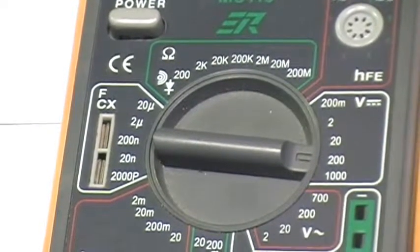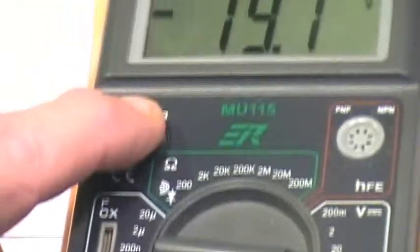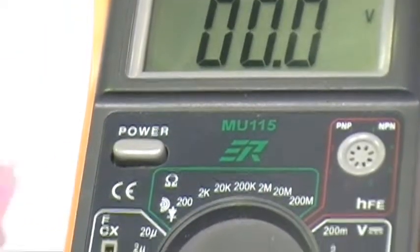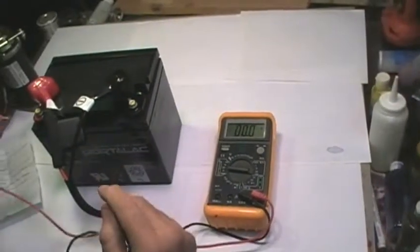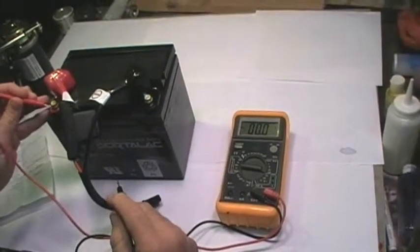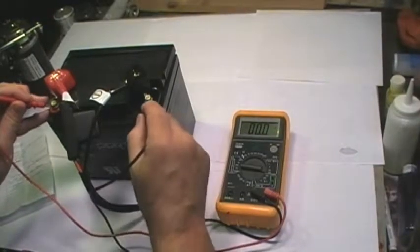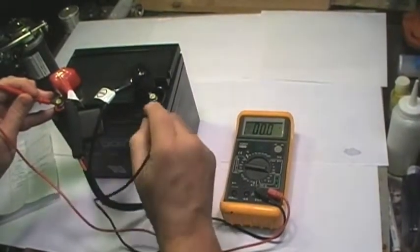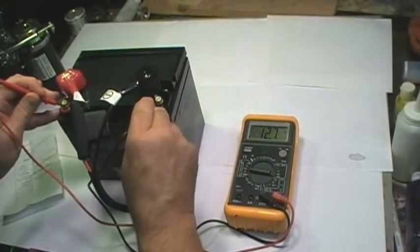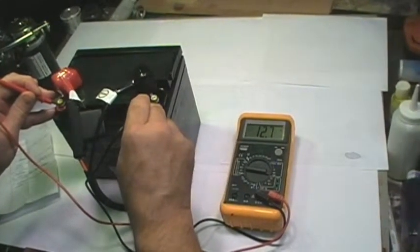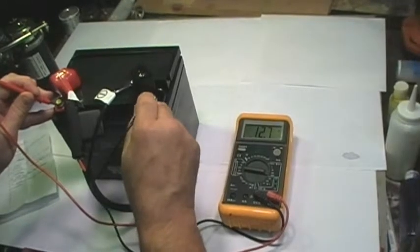Alright, so what we're going to do is turn this meter on and we're seeing zero volts. And then we'll come over here to the battery and we'll touch the two terminals, the test lead to one terminal and the other test lead to the other terminal. And you'll see on the scale that we got 12.7 volts. That means we have a good battery.